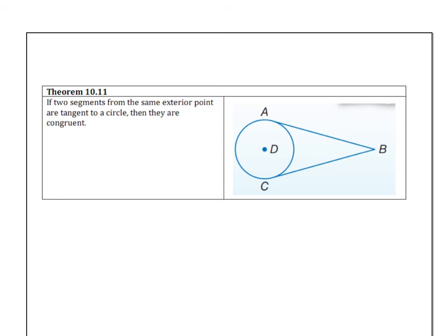Next, if two segments from the same exterior point are tangent to a circle, then they are congruent. So in other words, if segment BA comes up and touches the circle in one point, and then segment BC, same thing, touches the circle in one point, the distance from B to A and B to C will be the same. So segment BA will be congruent to segment BC if both of those segments are tangent to the circle.